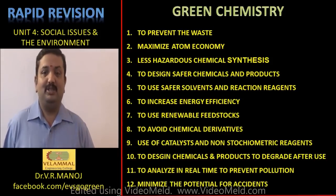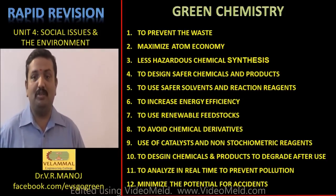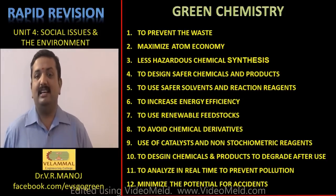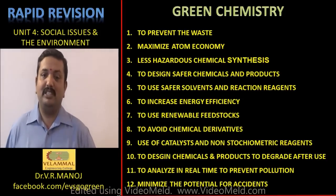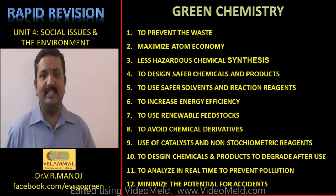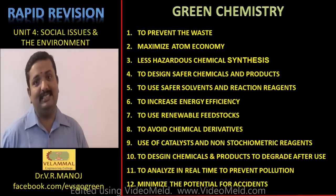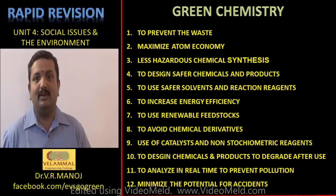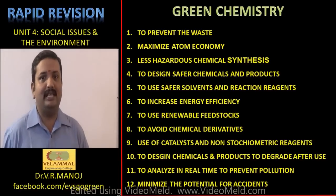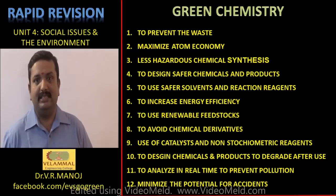Continuing the 12 principles of green chemistry: 8) avoid chemical derivatives, 9) use catalysts and not stoichiometric reagents, 10) design chemicals and products to degrade after use, 11) analyze in real time to prevent pollution, and 12) minimize the potential for accidents. All 12 principles ensure that chemistry, chemical products, processes, and the chemical industry function in an environmentally sustainable manner.